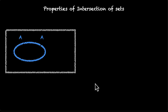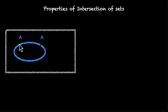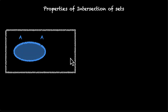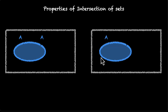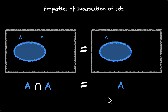We have A and then we have A again. What's the intersection of A and A? We have everything in A intersecting with everything in A. Because these two sets are identical, they have everything in common, so the intersection of A and A is just A. So A intersection A is equal to A. This is called the idempotent law.